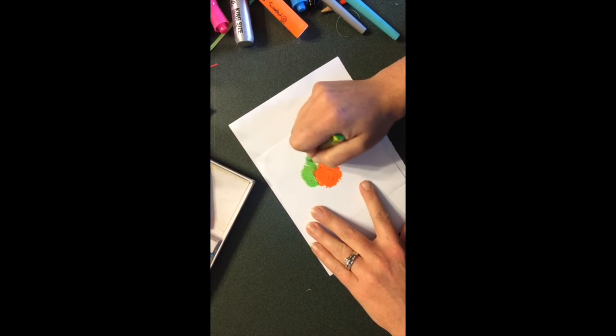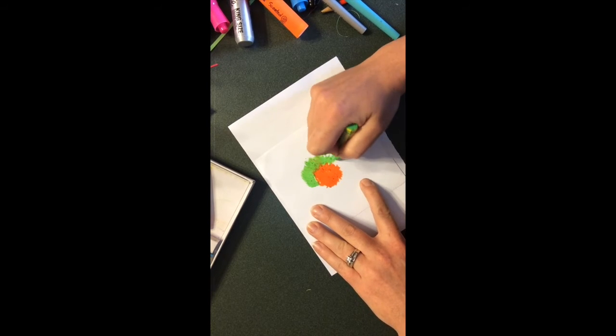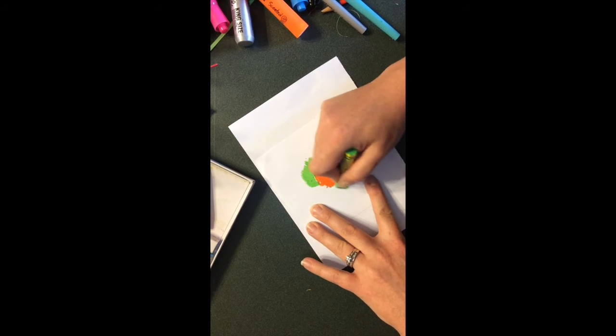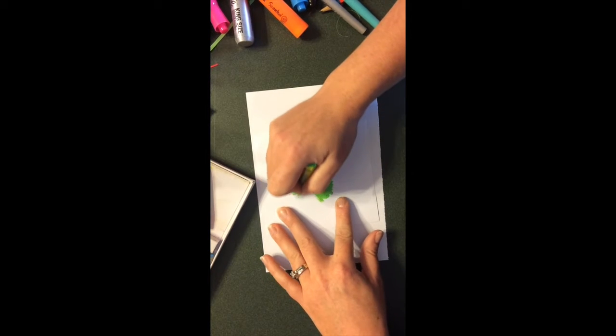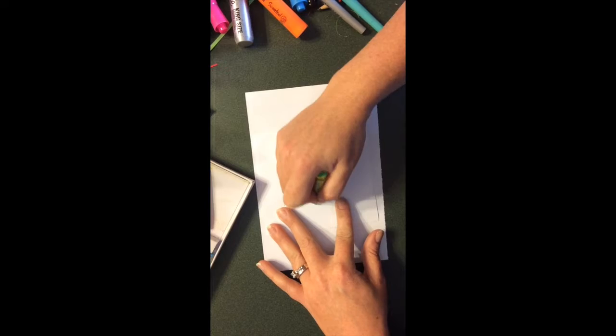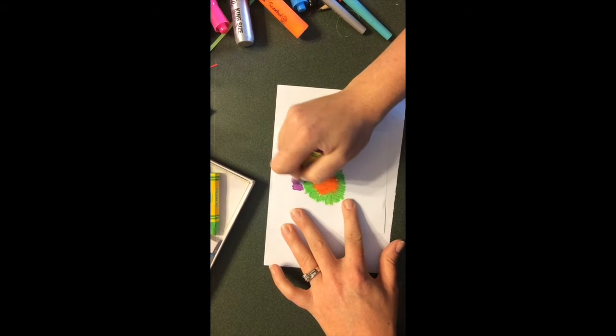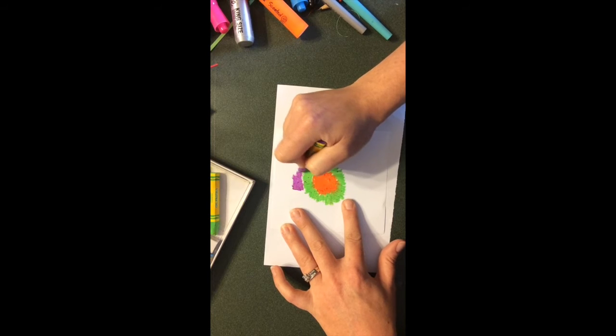Whatever you do, you make a shape and then you do this zigzag back and forth right around that shape. You can do skinnier zigzags if you want. I tend to do wider ones.